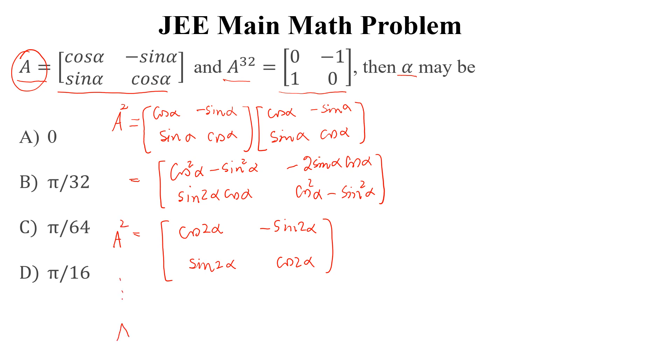Now, if we continue this pattern, A³² will be equal to cos32α, minus sin32α, sin32α, cos32α, which equals the given matrix [0, -1; 1, 0].